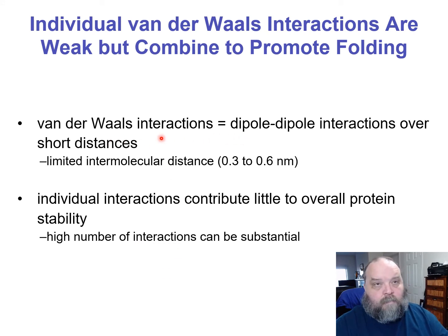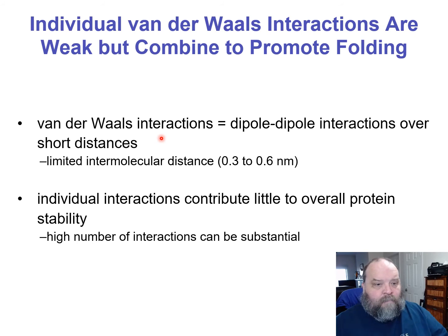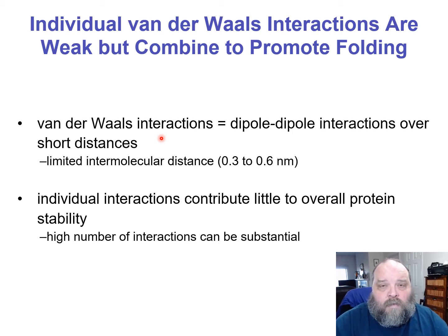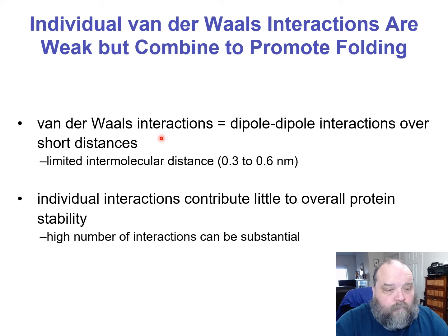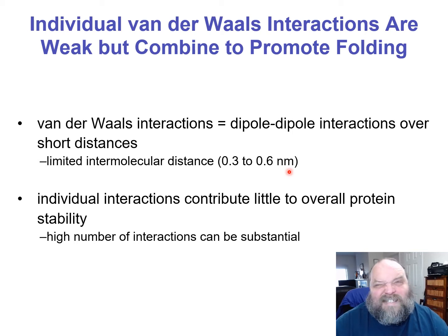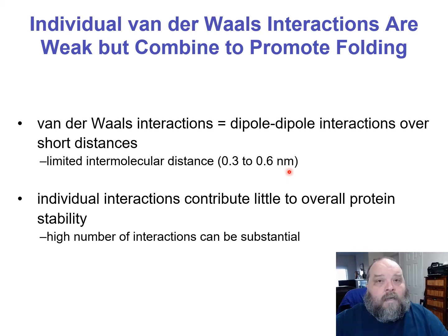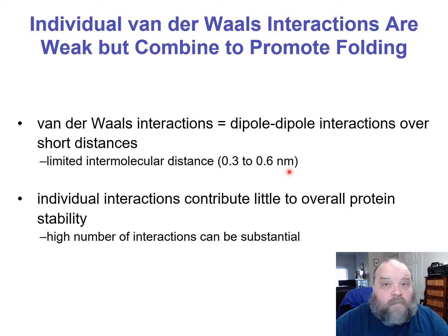The van der Waals interactions — you get two things and force them close enough together. Even if there's no hydrogen bonding or ionic bonding, just the close proximity means any dipole is going to start interacting. It may not be a true ionic or hydrogen bond, but you force them close enough together, meeting that radii we talked about in the previous chapter. You can force two molecules to interact. The distance here is 0.3 to 0.6 nanometers, while a covalent bond is 0.09 nm and a hydrogen bond is about 1.7. So it's not as tight — it's over a greater distance, thus a weaker interaction. But the interactions are cumulative, just like we've talked about previously with hydrogen bonds.